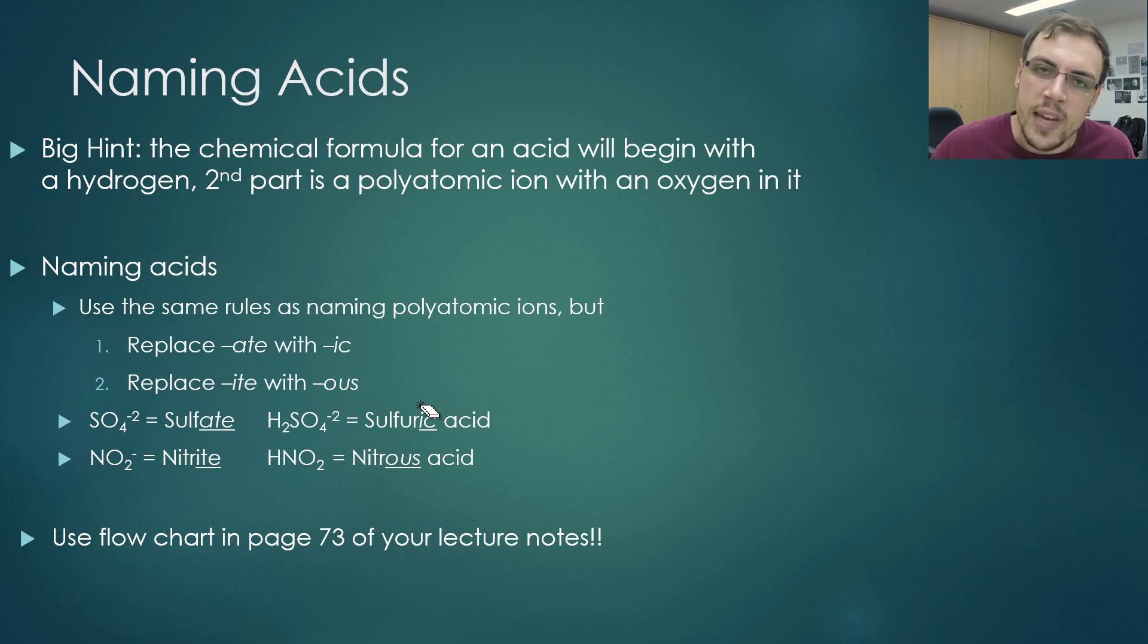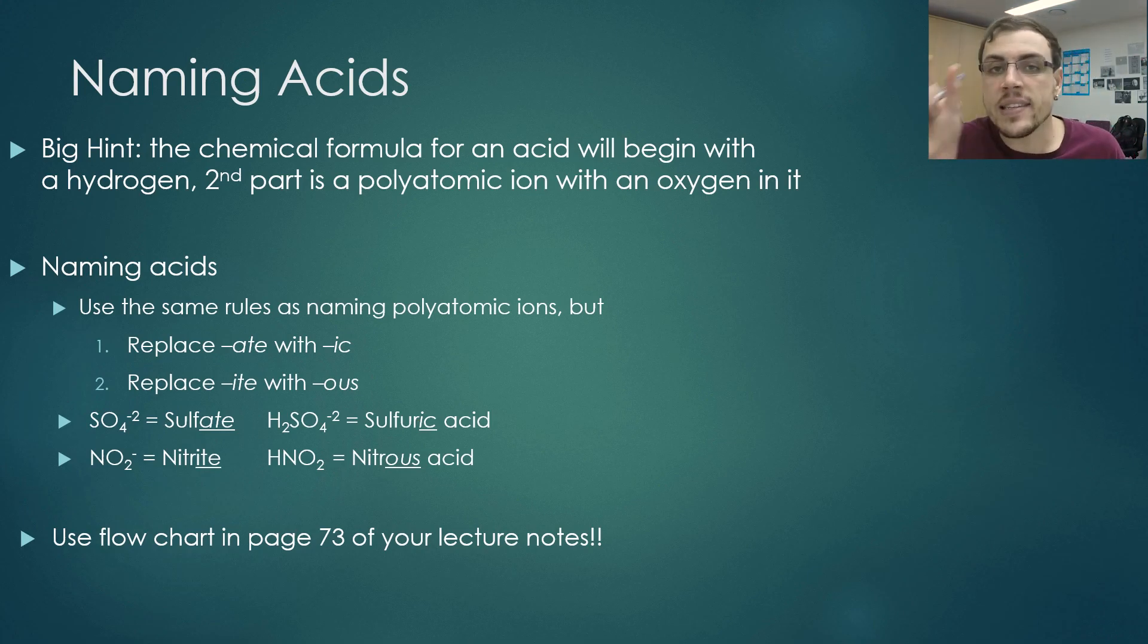Let's have a look at the rules of naming an acid. You use the same rules as naming a polyatomic ion, but there's a couple of different changes. Instead of using -ate, you would use -ic, and instead of using -ite, you use -ous. Here we have sulfate, and that sulfate turns into sulfuric acid. You just add acid onto the end. Instead of sulfate, it turns into sulfuric acid. And here, if we have nitrite, that will turn into nitrous acid.